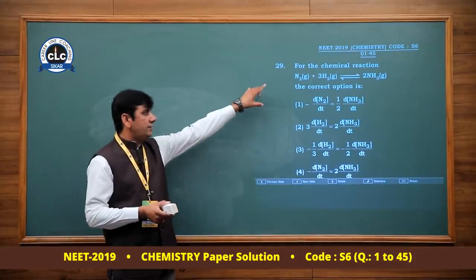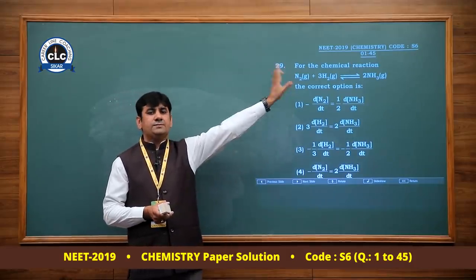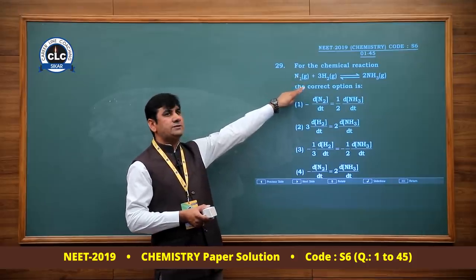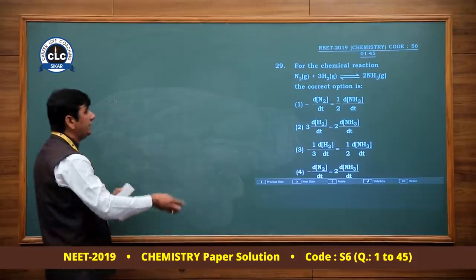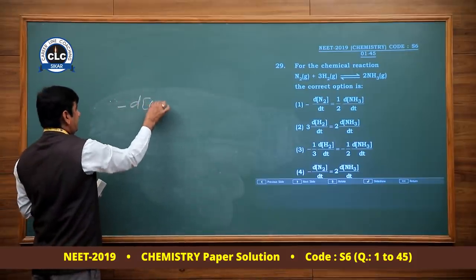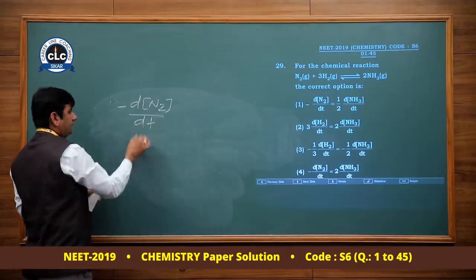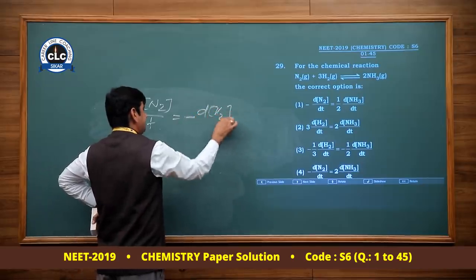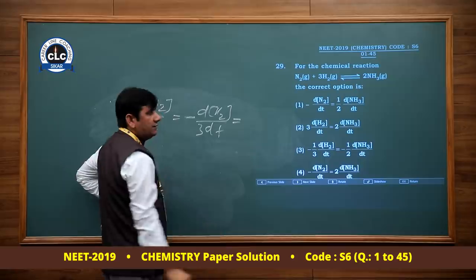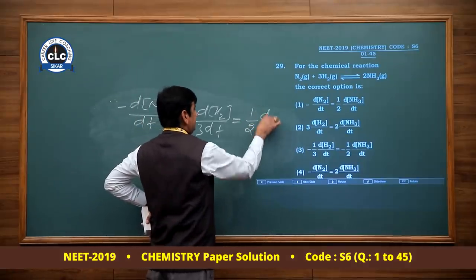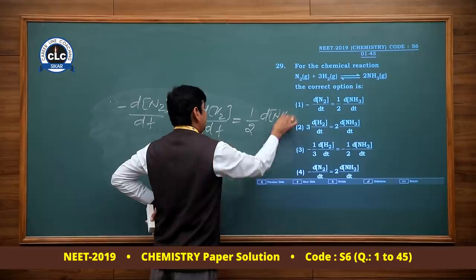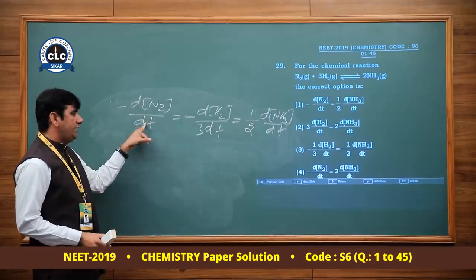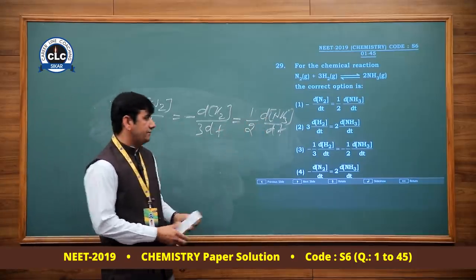Chemical kinetics question: given the reaction, find the relation between rate of disappearance of N2, rate of disappearance of H2, and rate of appearance of NH3. The relation: −d[N2]/dt = (1/3)d[H2]/dt = (1/2)d[NH3]/dt. Specifically: −d[N2]/dt = (1/2)d[NH3]/dt. Option 1 is correct.